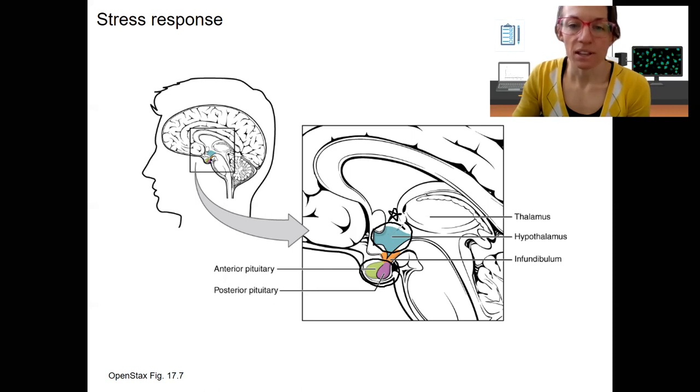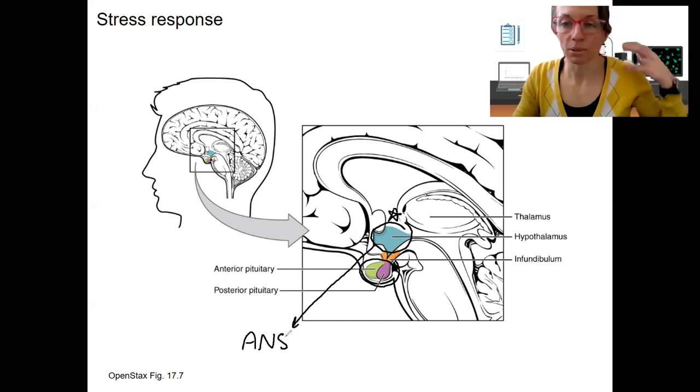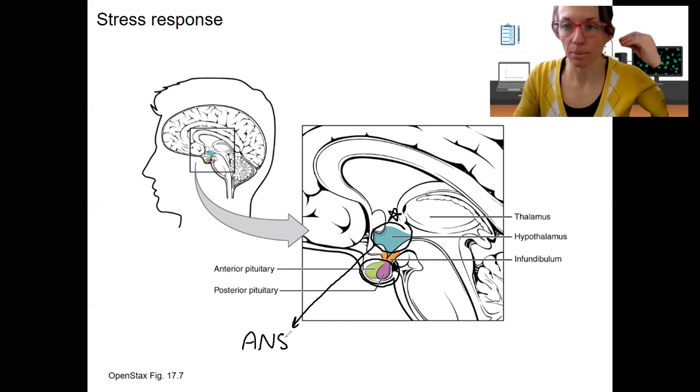The hypothalamus is nervous tissue. It's going to both initiate an autonomic nervous system response. So that's through the spinal cord and out the parasympathetic fibers that are going to regulate norepinephrine.